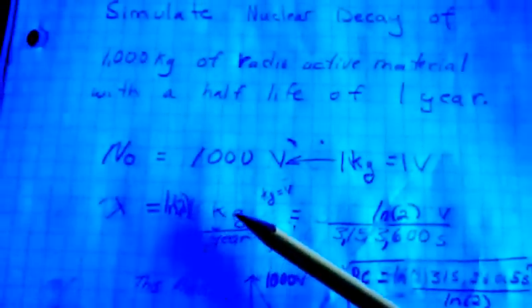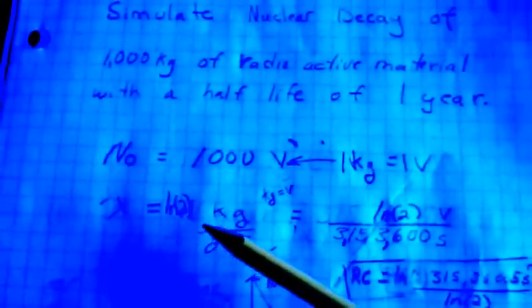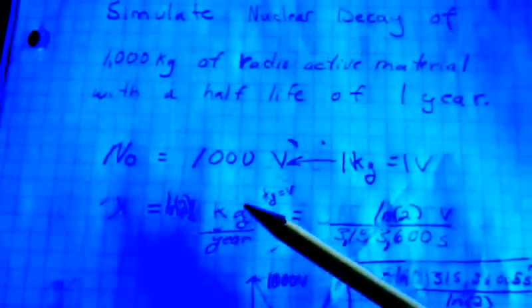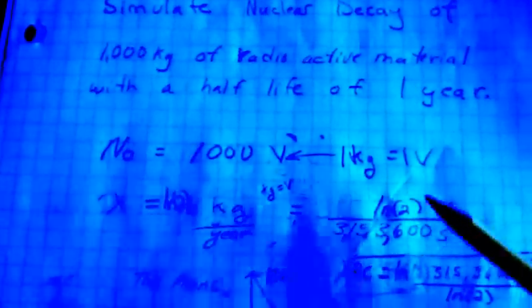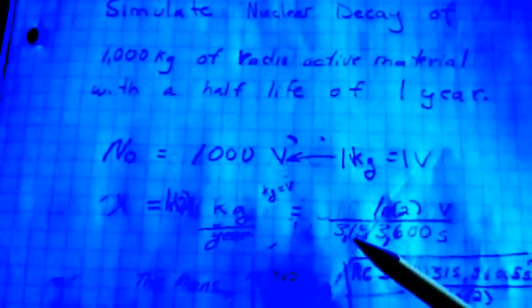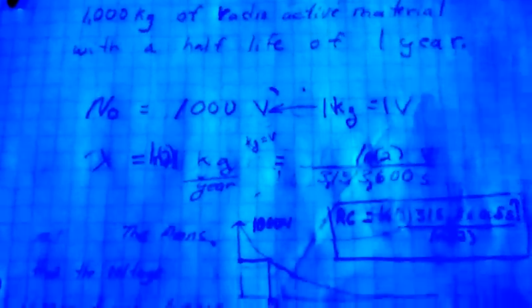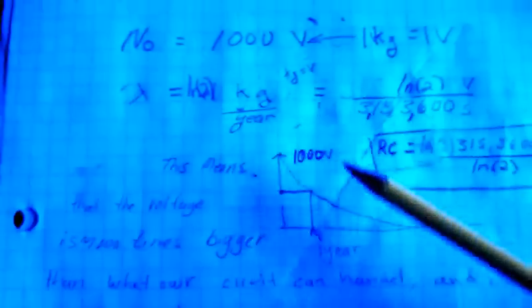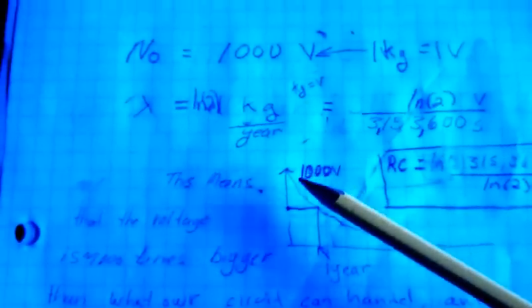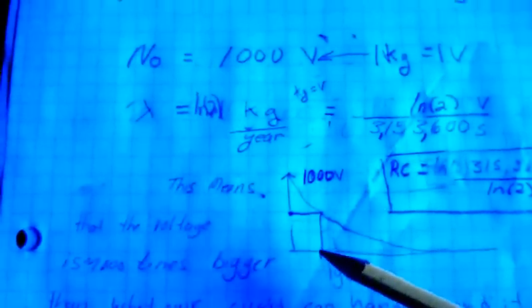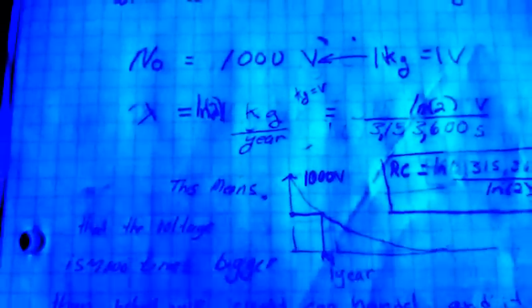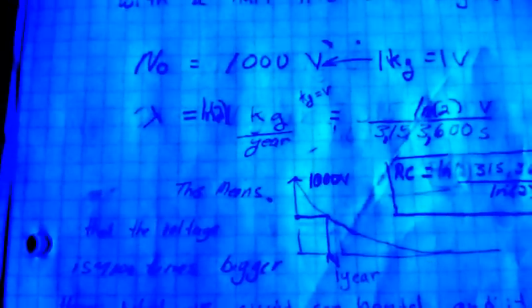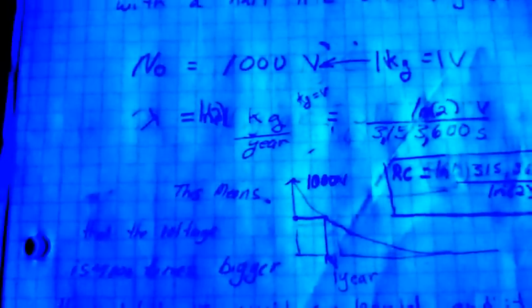Then for the time constant of the half-life of one year, we have log two kilogram per year or log two over more than three million seconds. This means that our circuit has to be able to handle a thousand volts and run for many years to actually simulate this. And this would be a real-time simulation.